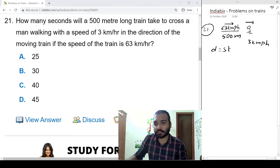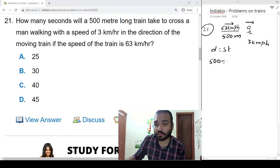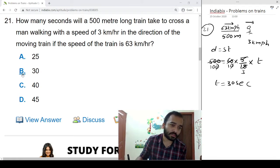Distance is equal to speed into time. Distance is 500 meters, speed is 63. Both are in the same direction, so 63 minus 3, so 16 into 5 by 18 into time. So 10 times 3 times, this is 10. T is equal to 30 seconds, option B.